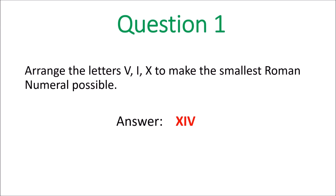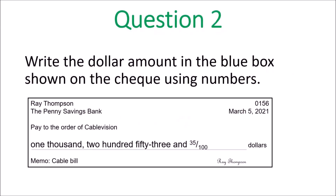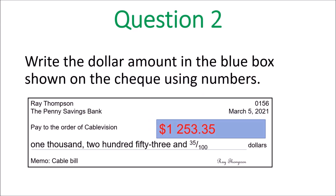You cannot put XVI — that would be 16 — so XIV is the smallest possible number you can make using those three letters. We move on to question 2: write the dollar amount in the blue box shown on the check using numbers. In words it is one thousand two hundred fifty-three dollars and thirty-five cents, so you write 1253.35.